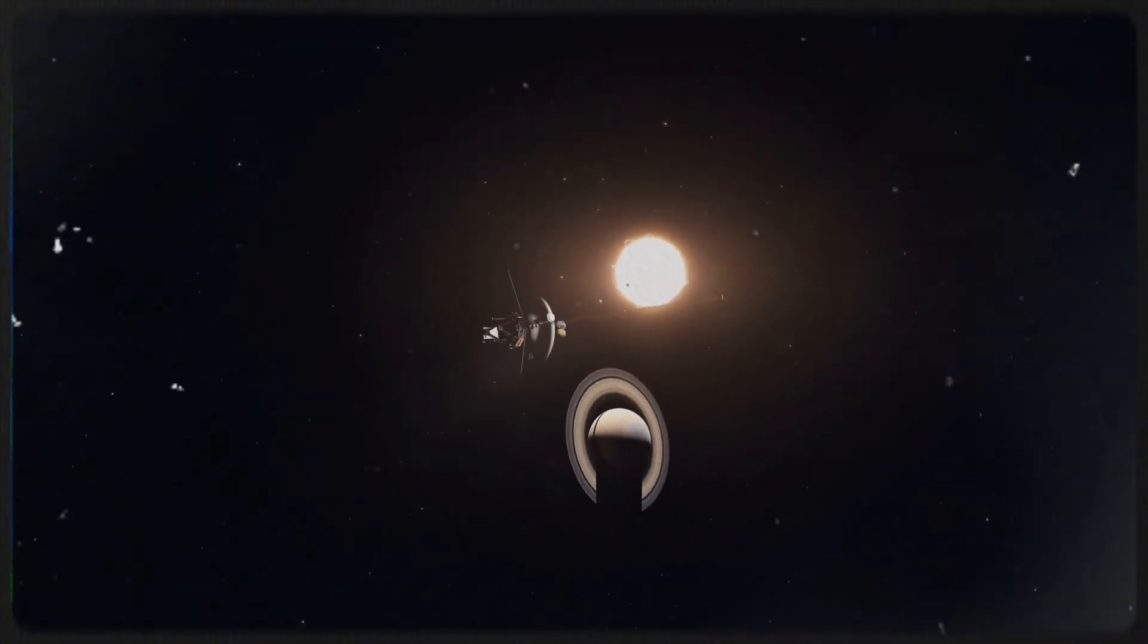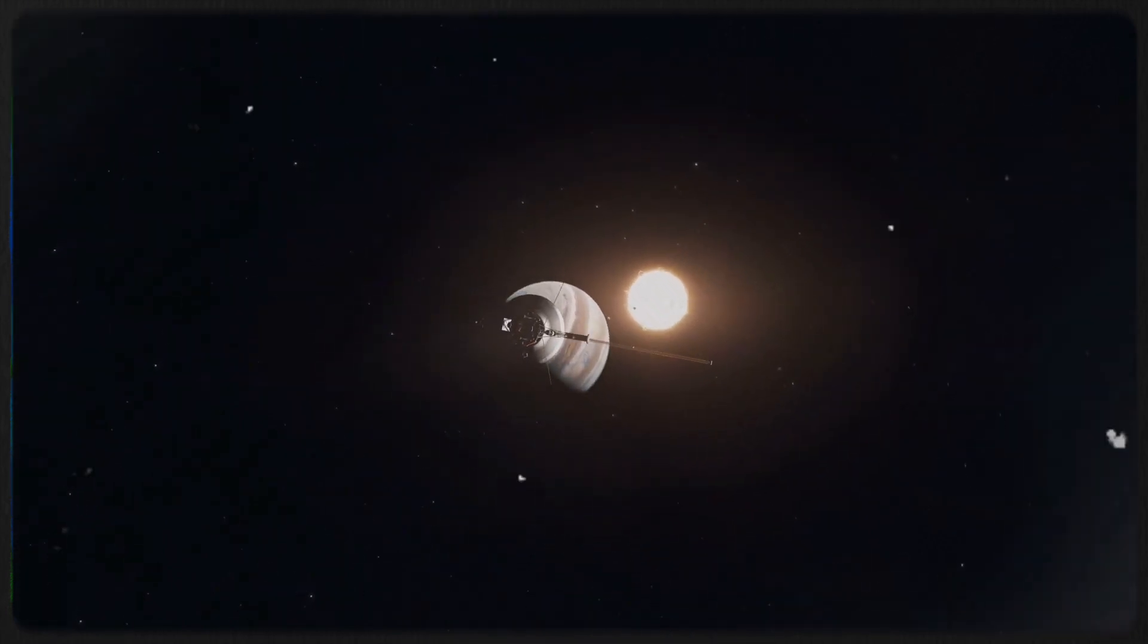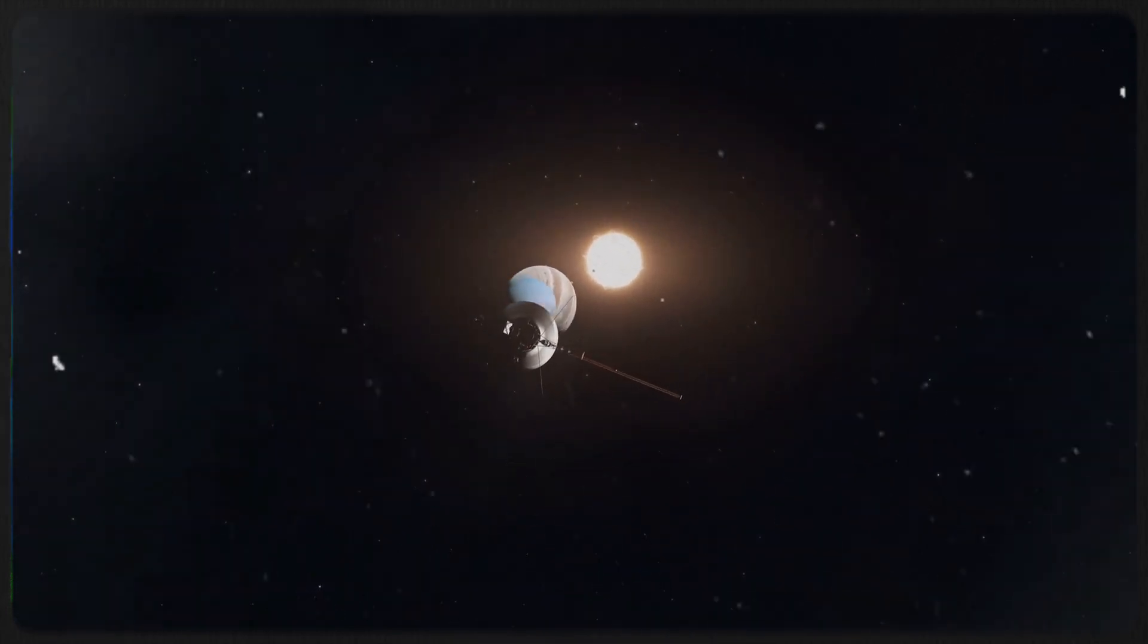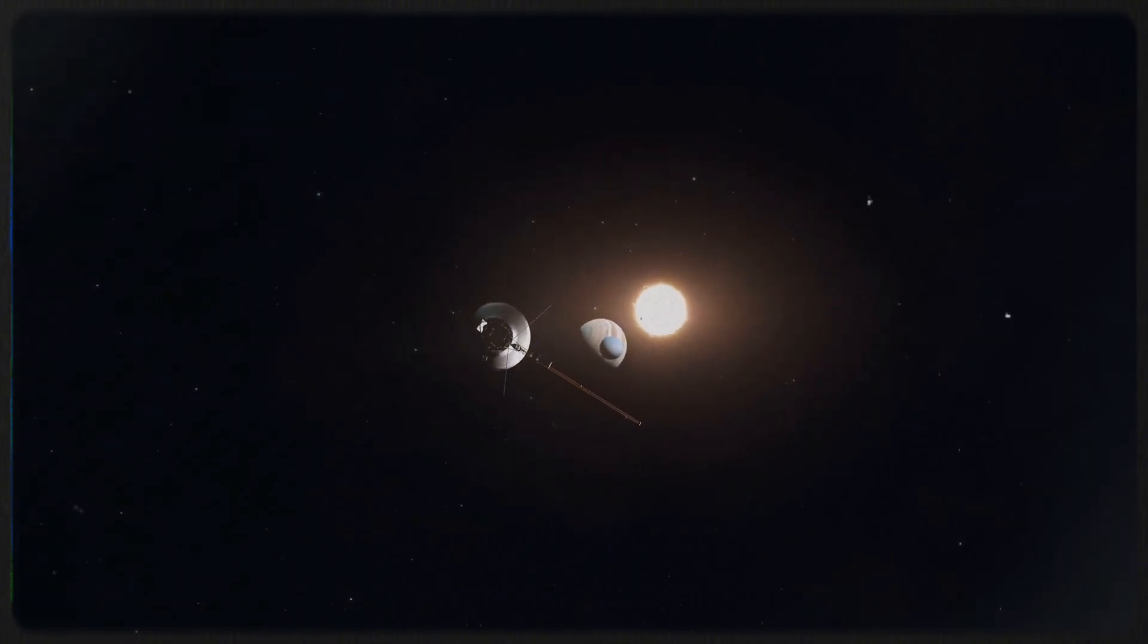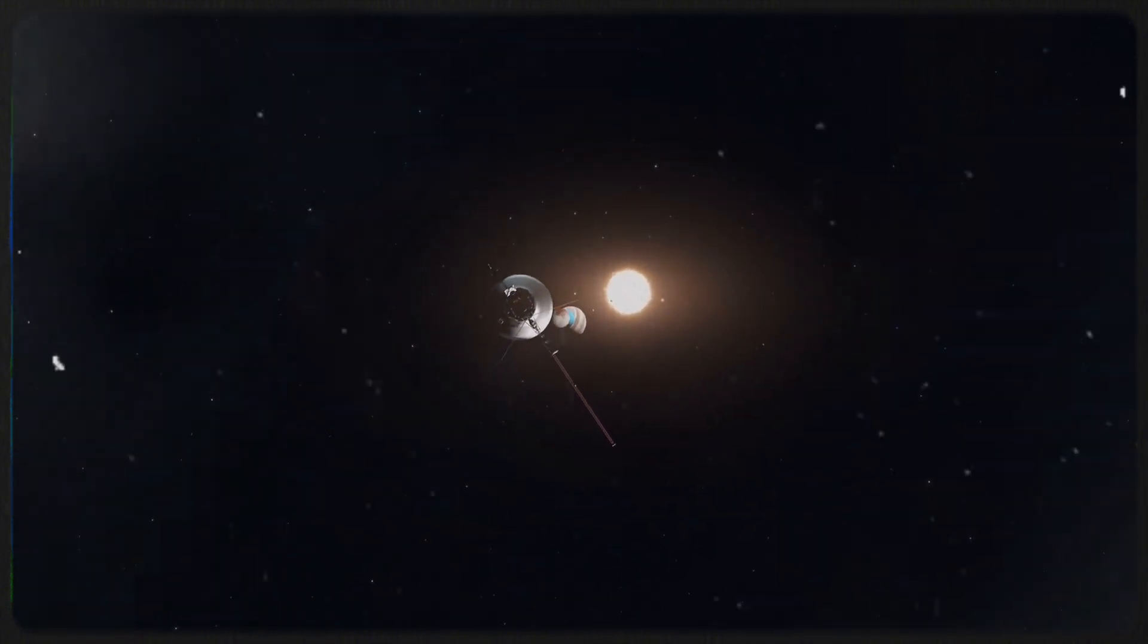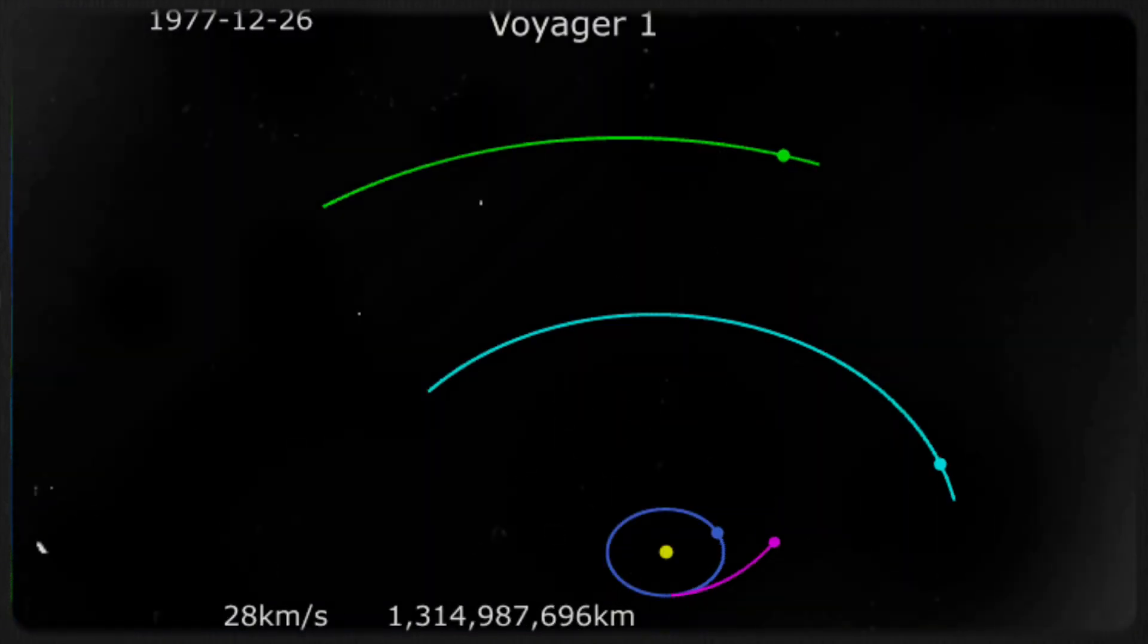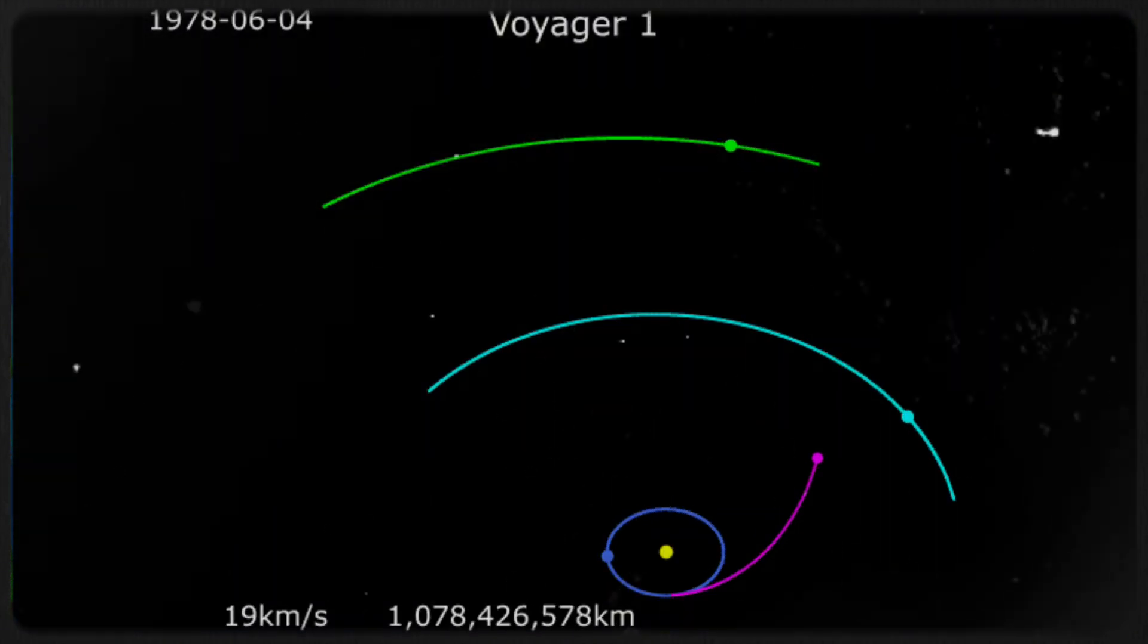Although Voyager 1 and its twin spacecraft were launched just two weeks apart and followed slightly different trajectories, Voyager 1 managed to outpace its counterpart significantly, reaching key milestones in just 12 years, a notably short duration in the realm of space travel. Voyager 1 also made history as the first spacecraft to reach the edge of the solar system.